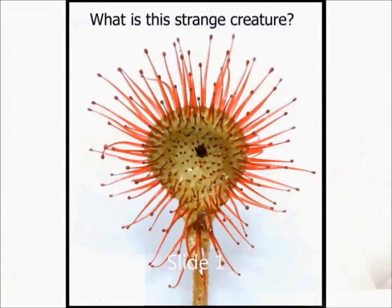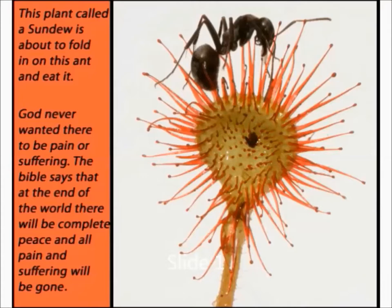Now what is this strange creature? I found this in the same park near my house. This creature eats things too. It's a plant called a sundew. It has honey-like goo on its little spines, and they smell like honey so insects are attracted to it — but they actually act like glue. Then it folds in on itself and eats the insect. It's about to eat this ant.